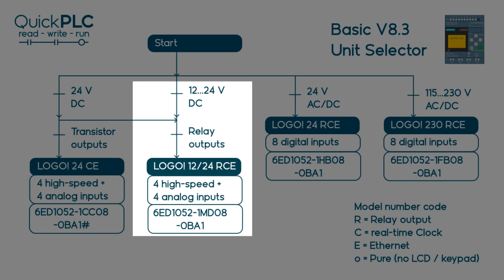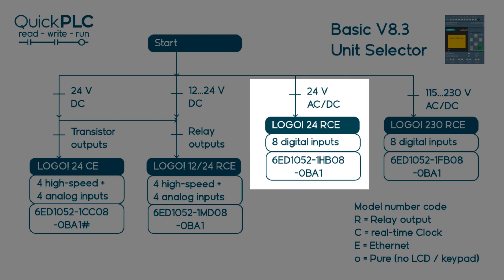For 12 to 24 volt DC you need the 1224 RCE. The 24 RCE can handle DC or AC inputs but has no analog or high-speed inputs on the basic module.